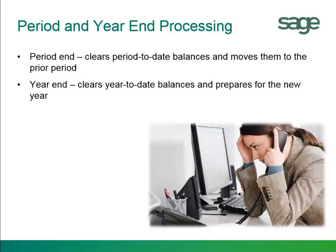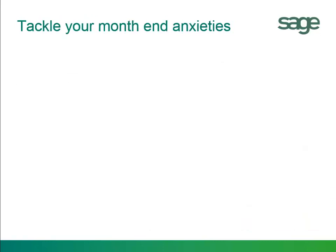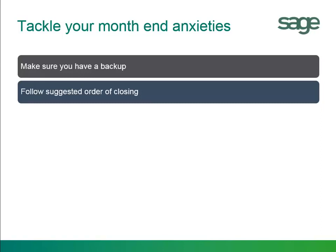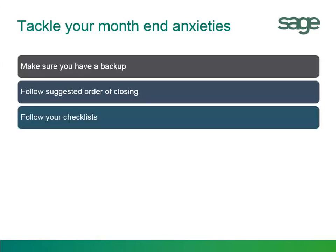And if you wish, also database maintenance. Let's take a closer look at what order and best practices to make your month-end process much easier. First, we recommend that you do a backup, whether it be a SQL backup or you can use the database dump utility. It's imperative you follow the suggested order of closing. You can follow a checklist which you can download from the Sage website.